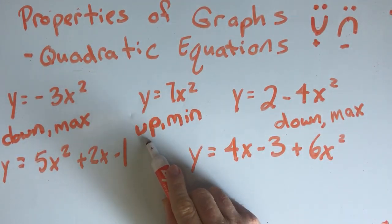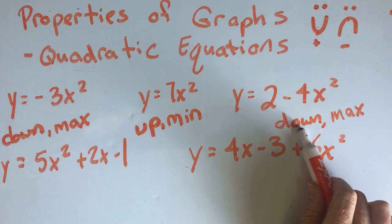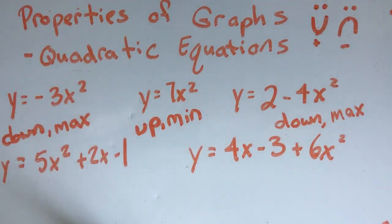So you can't have an upward turning graph that has a maximum. It doesn't work that way. So down is associated with max. Up is associated with min or minimum.